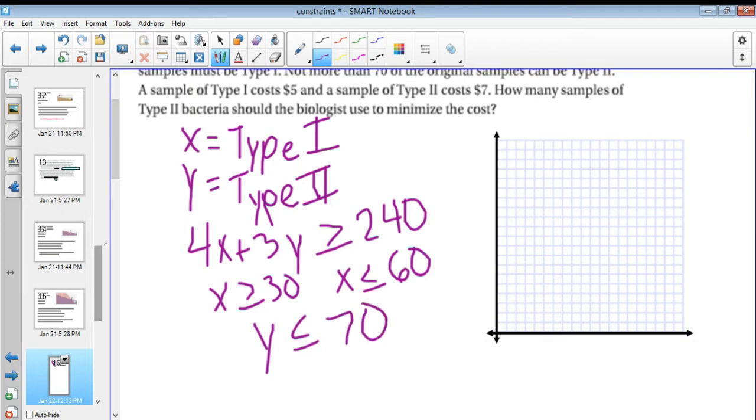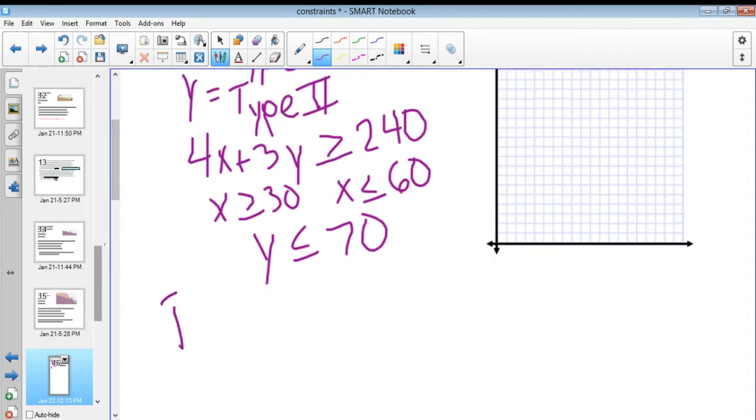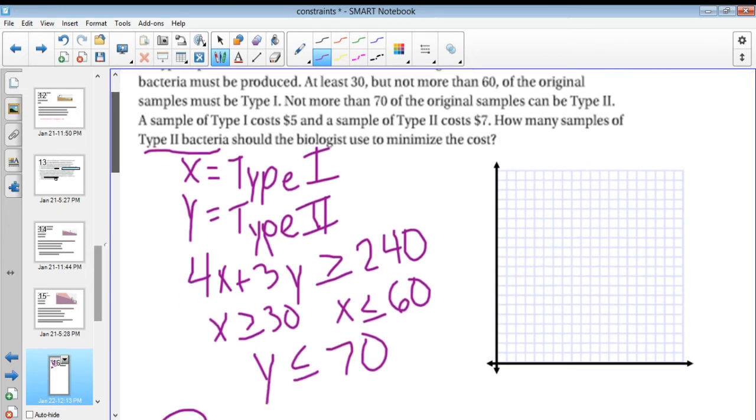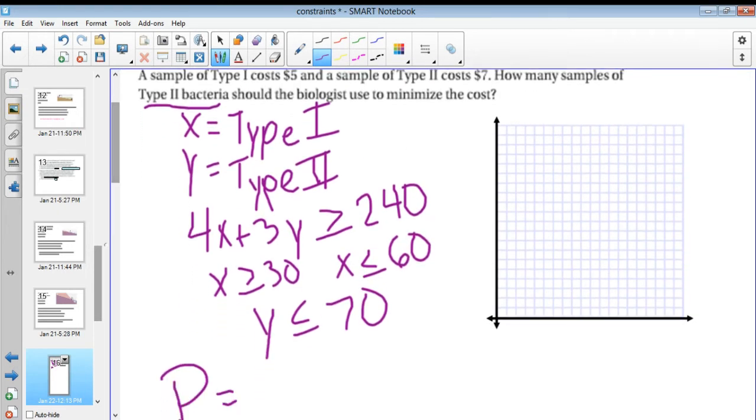Now we're told that the sample of Type 1 costs $5, and the sample of Type 2 costs $7. How many samples of Type 2 bacteria should the biologist use to minimize cost? So here we're talking about just Type 2, but our profit is going to be equal to 5x + 7y, and we want the least amount here. And in the end it's actually asking just how many about Type 2, but we're going to have to figure out both anyways because we're figuring out the intersection point.